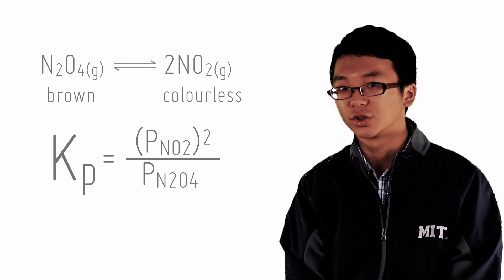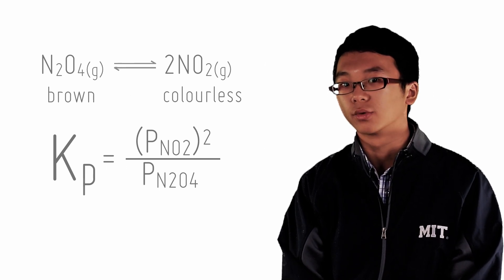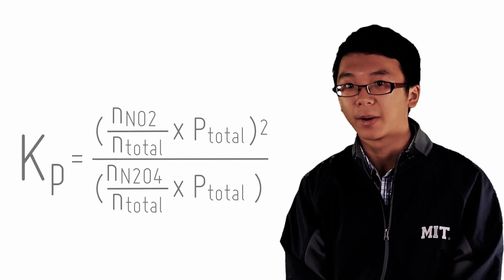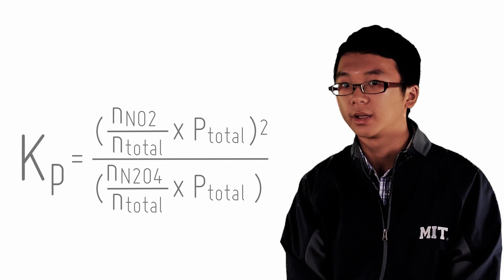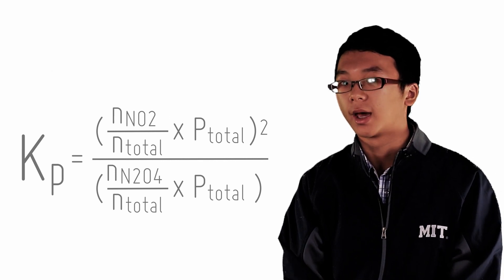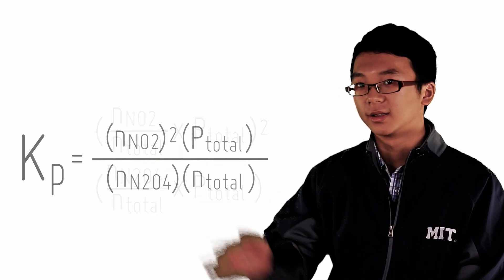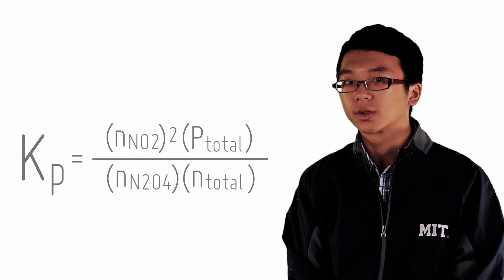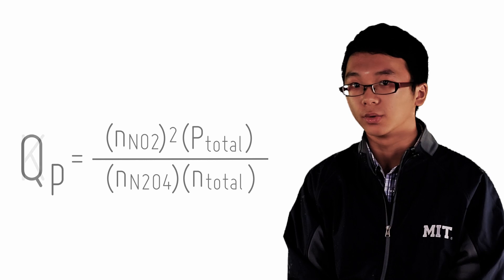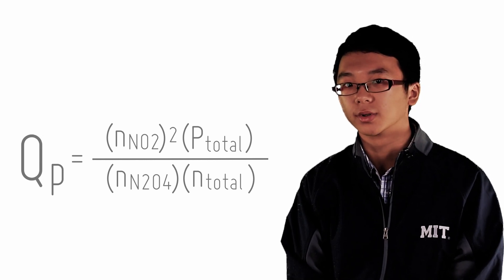Let's use the equilibrium expression to prove it. Kp equals PNO2 squared over PN2O4. Let us put the total pressure of the system, P total, into the equation. The partial pressure of each reactant and product is its mole fraction multiplied by the total P. Substituting and expanding, we get an expression that neatly shows where P total appears. So increasing the total pressure will increase Q, and when Q increases, the equilibrium shifts to the left to decrease the number of moles of NO2.